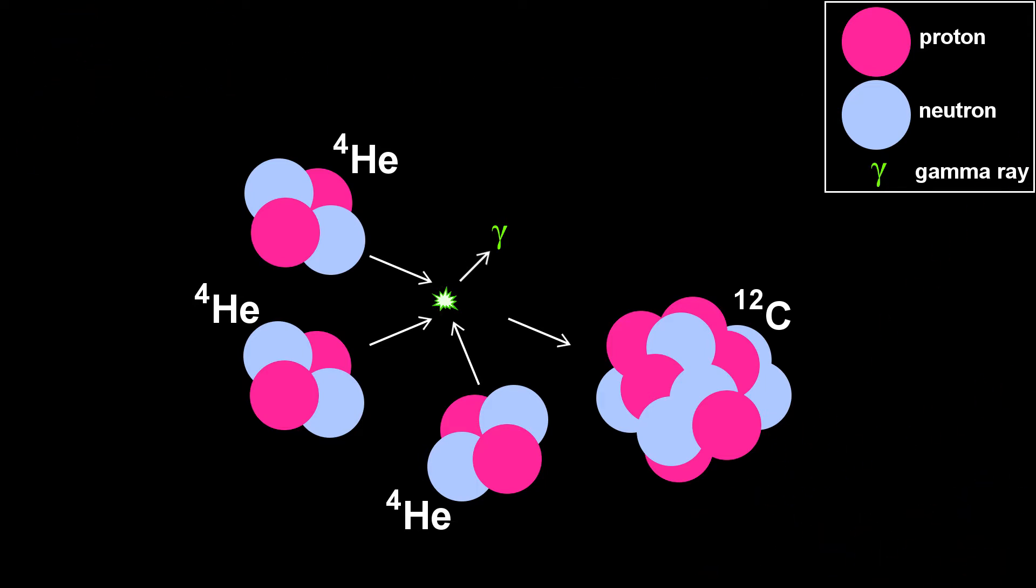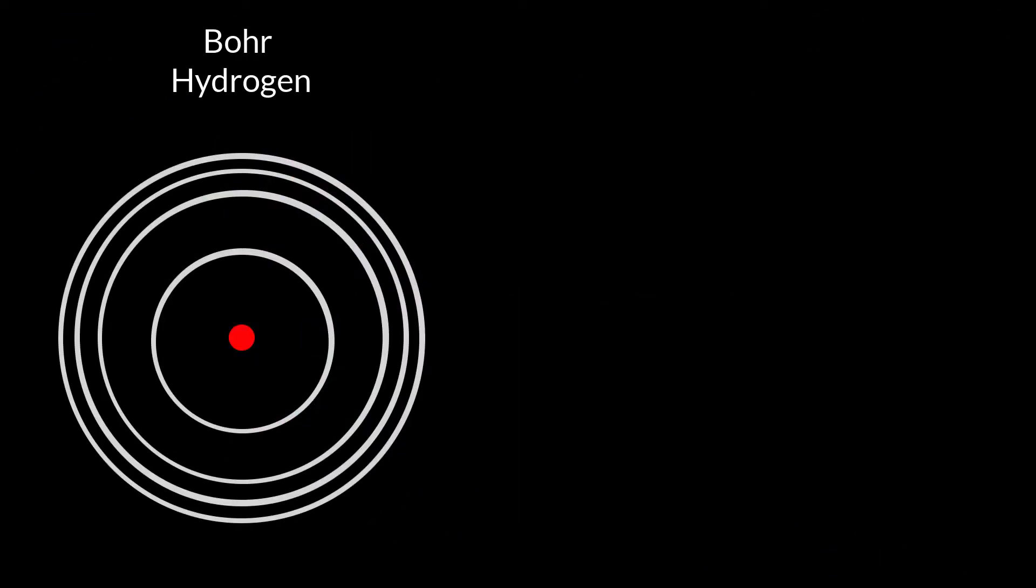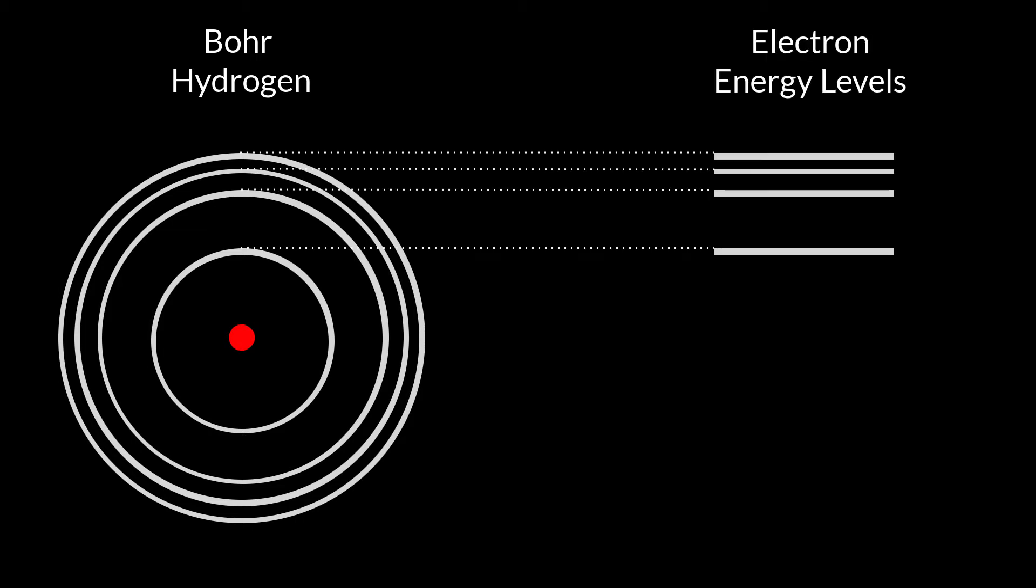Think about the traditional Bohr model of a hydrogen atom, with an electron behaving like a little planet orbiting a nucleus. The available orbits represent the energies an electron is allowed by the rules of quantum mechanics. We can draw these energy levels like this. In this hydrogen atom, the electron is in its lowest possible orbit, the lowest energy state, the ground state. If the electron picks up the right amount of energy from somewhere, it can move to a higher orbit, one of the possible excited states.